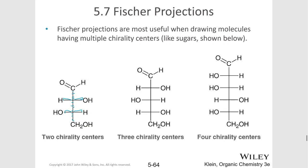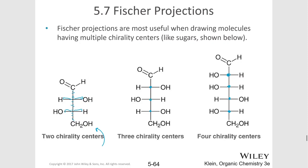Two chirality centers on the left, three chirality centers in the middle, and four chirality centers on the right. These sugars have many chirality centers. Generally, all of the middle horizontal lines on a sugar represent a chiral center, so they can be drawn very quickly like this.